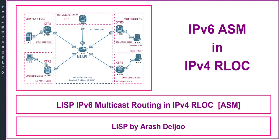Moreover, applications today are designed to support both IPv4 and IPv6 infrastructure. This changing requirement created a need to support IPv6 multicast over the LISP infrastructure, so that multicast applications using IPv6 addressing can communicate across multiple LISP sites.